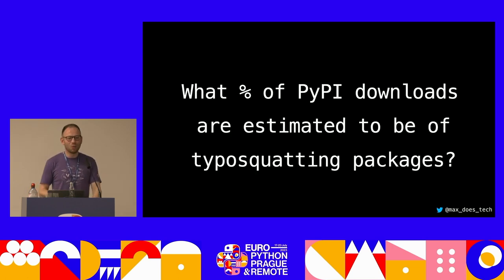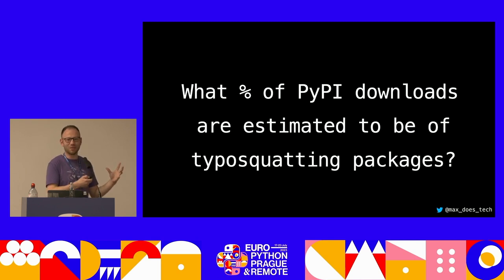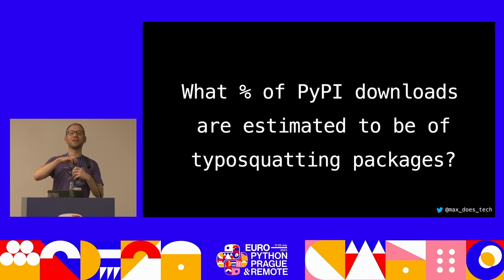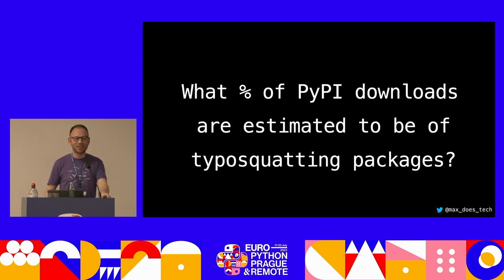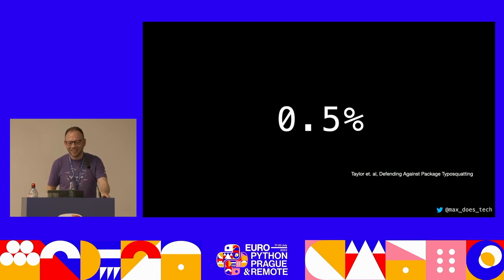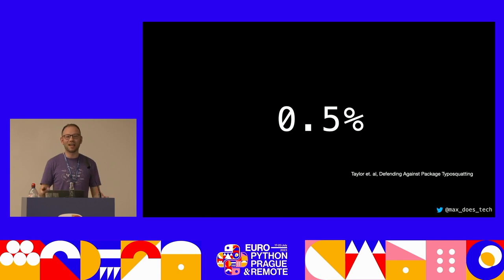Here's a better question: what percentage of downloads from PyPI are estimated to be of typosquatting packages — people who think they're getting something but are getting something else? The actual answer is 0.5%. But that's 1 in 200. Think about how many packages are downloaded every day — that's a really, really big number. Even if these typosquats aren't very likely, with the law of large numbers they're likely enough to actually get someone.